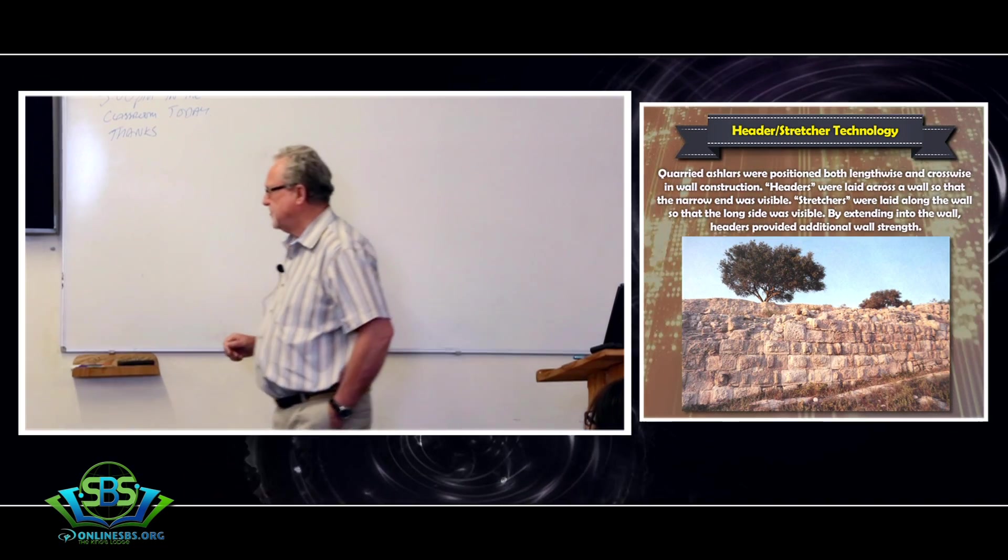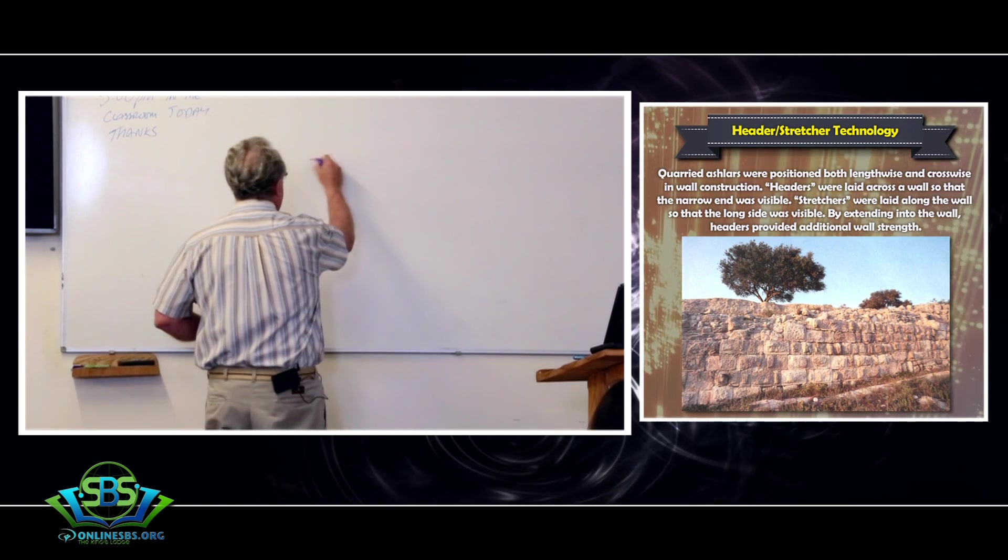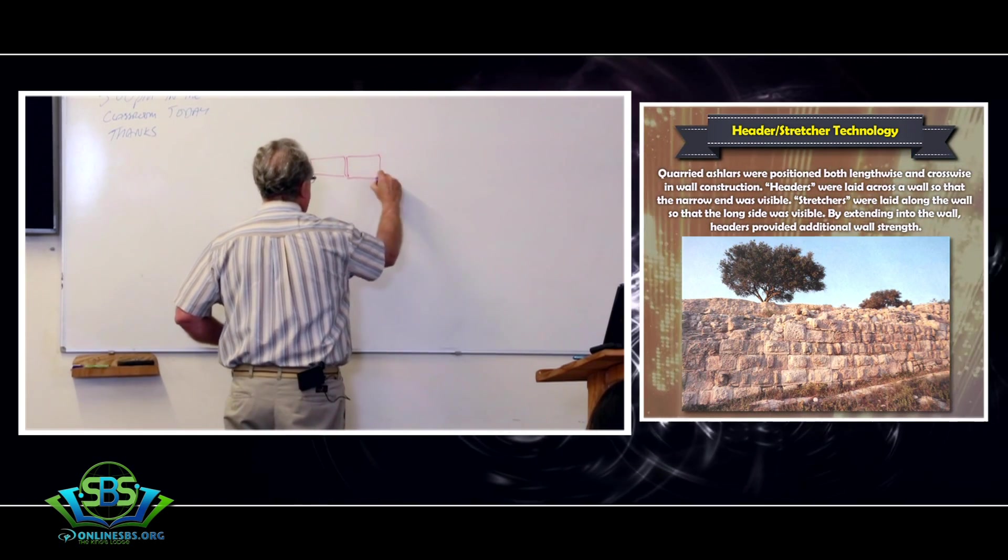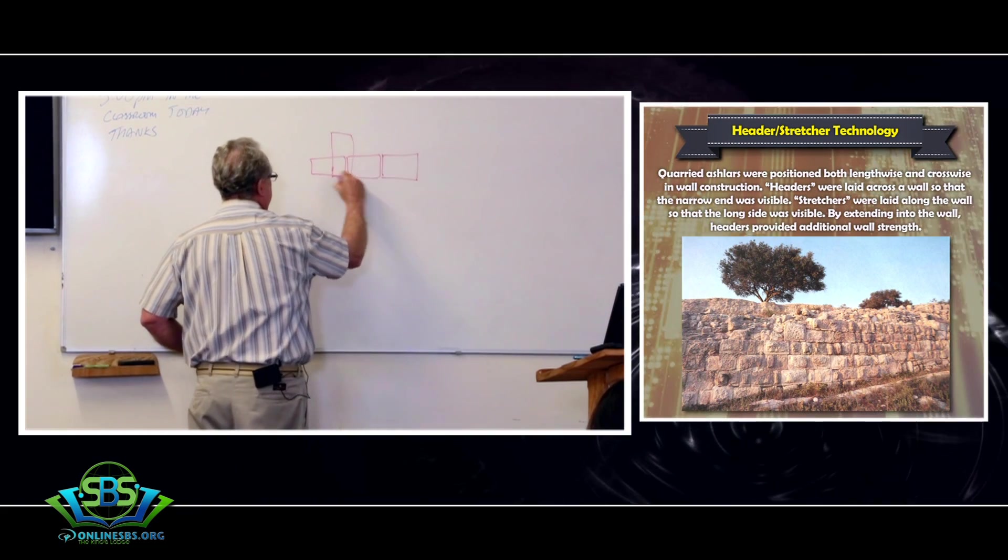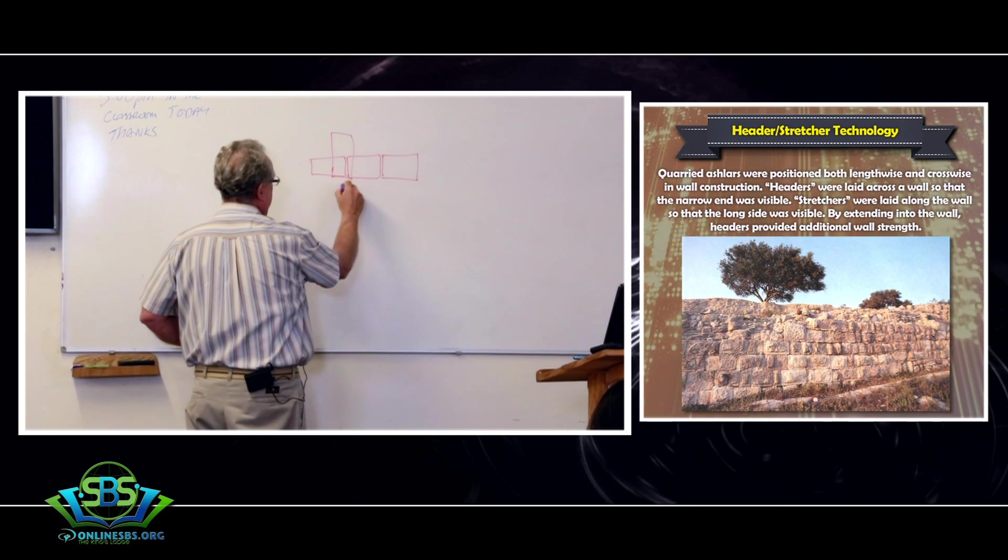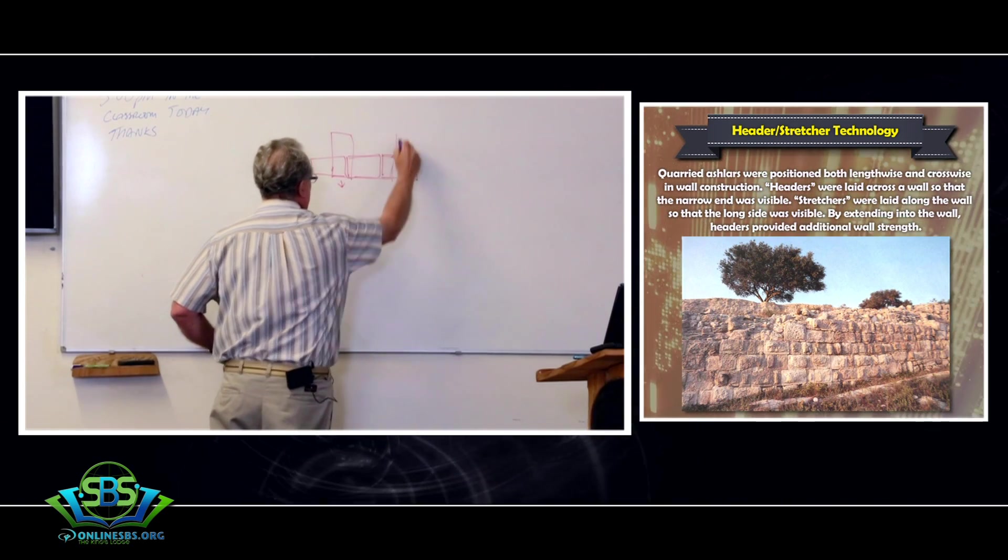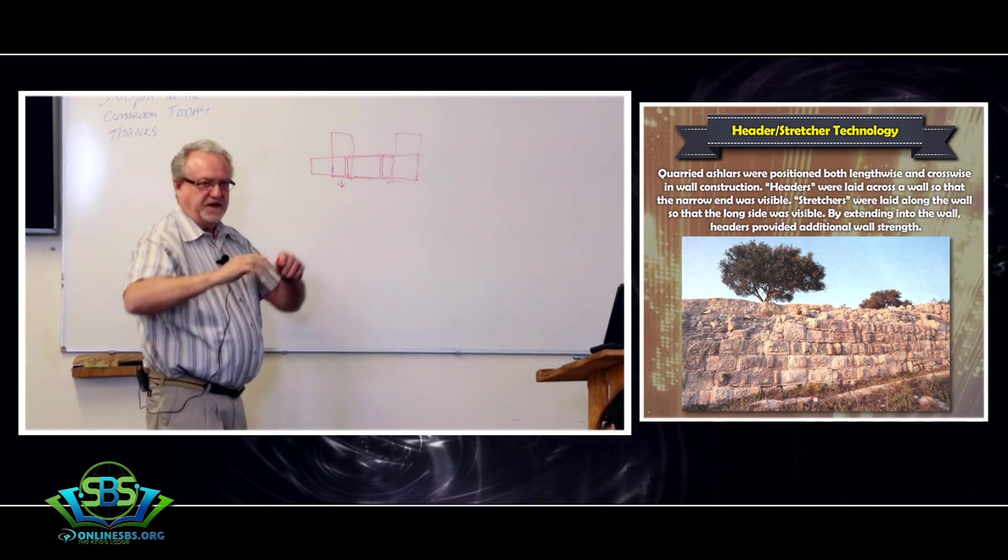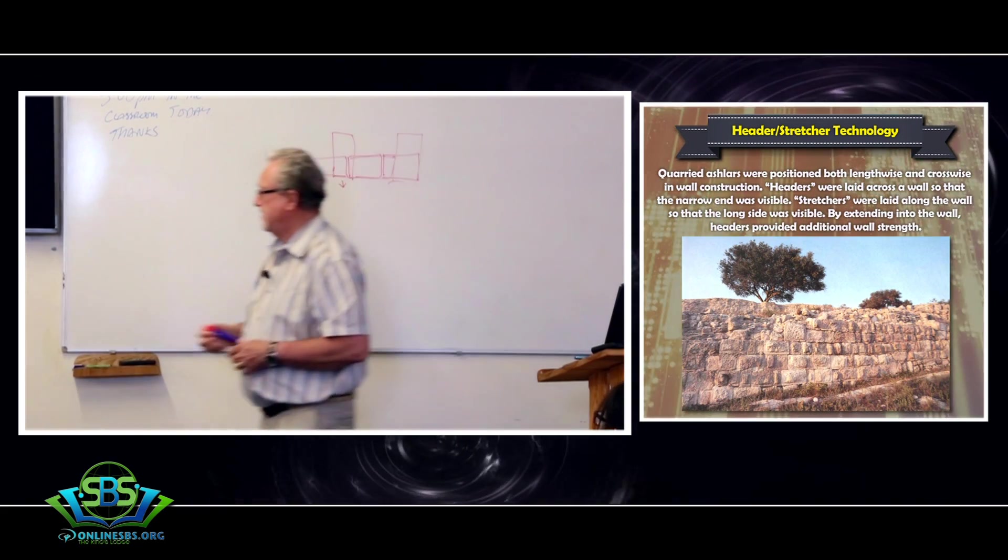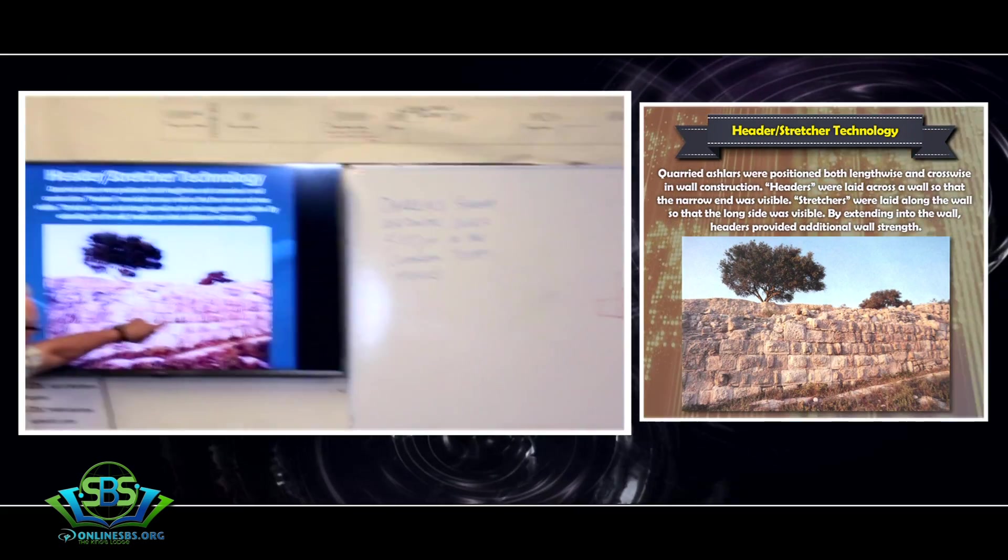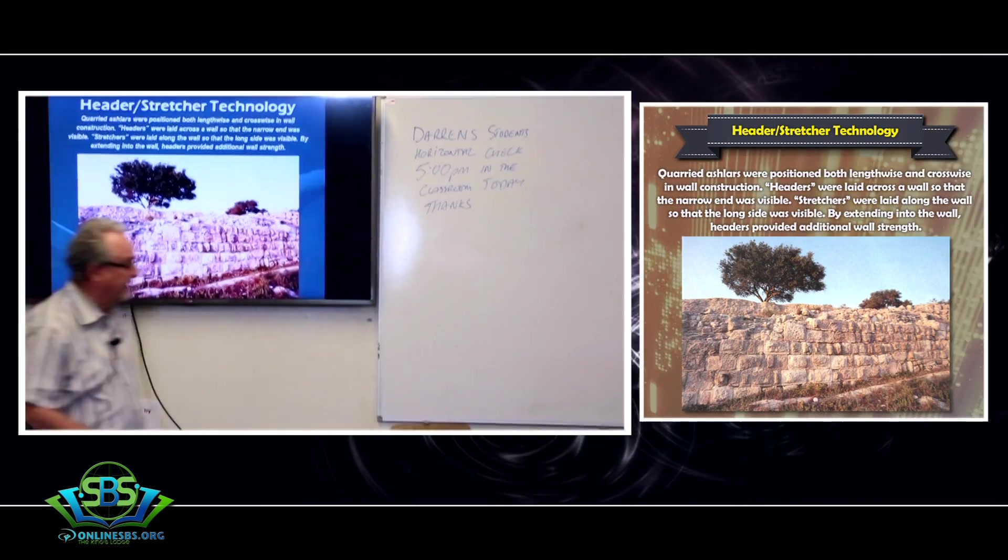Header stretcher construction is basically the idea of, if you're building a wall, you lay stone like this, and then periodically you have stones that go like this, so the short end is out here. This crossing of the long and the short gives a particularly strong wall, and you can see it in this depiction. You can see the short ends in this wall here, as opposed to the longer laying of the stones that direction.